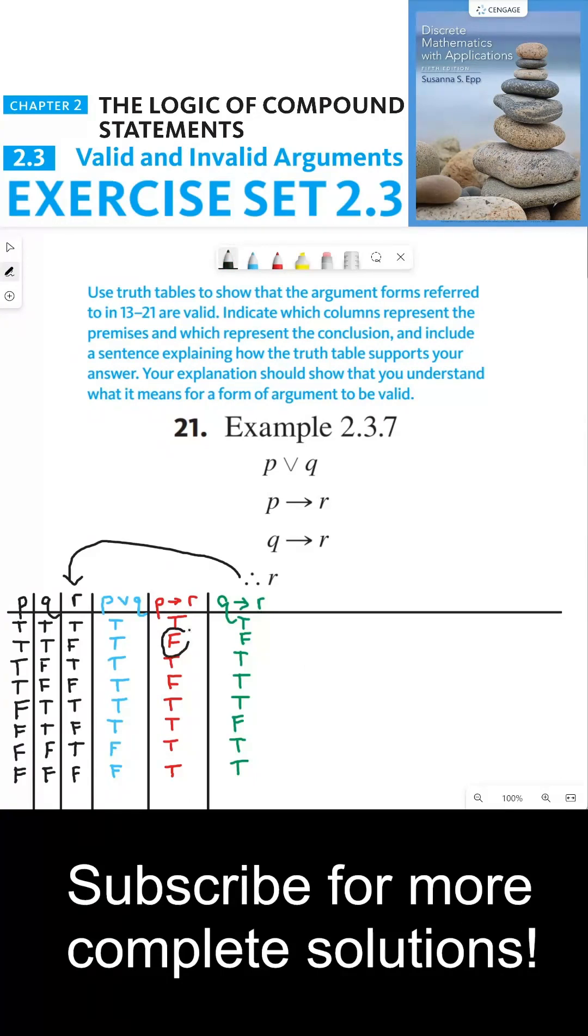For example, we don't have to consider row 2, we don't have to consider row 4, we don't have to consider row 6 or row 7 or row 8. So all the other rows have true assumptions.